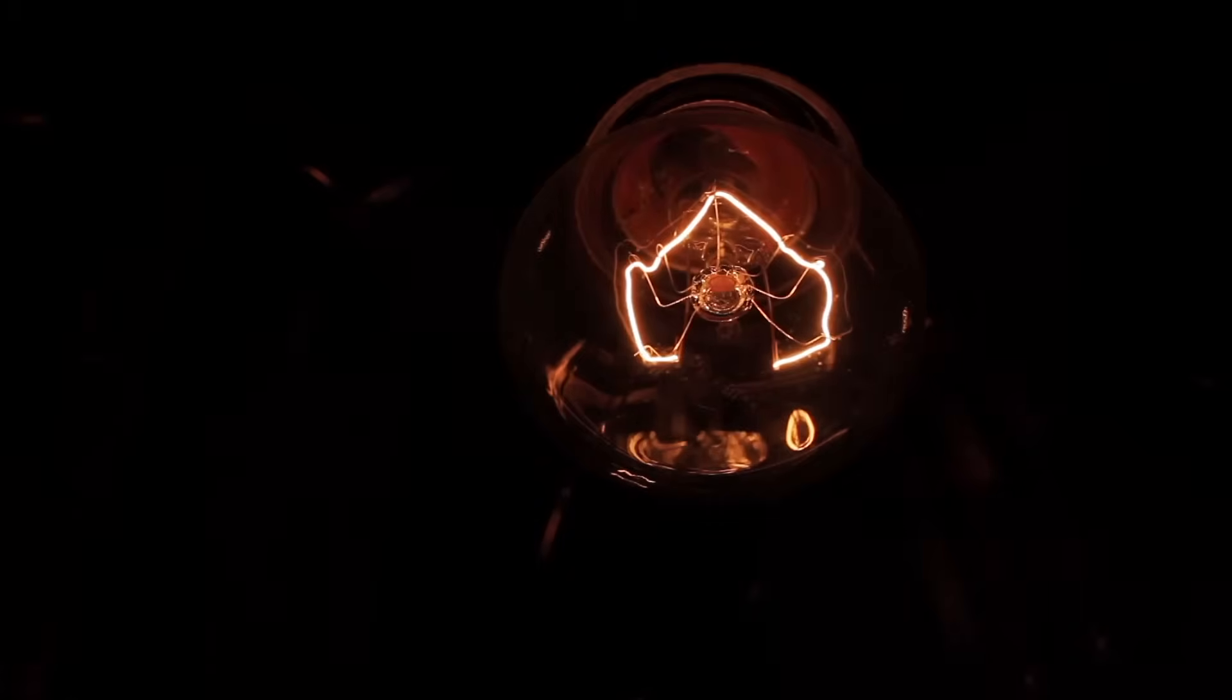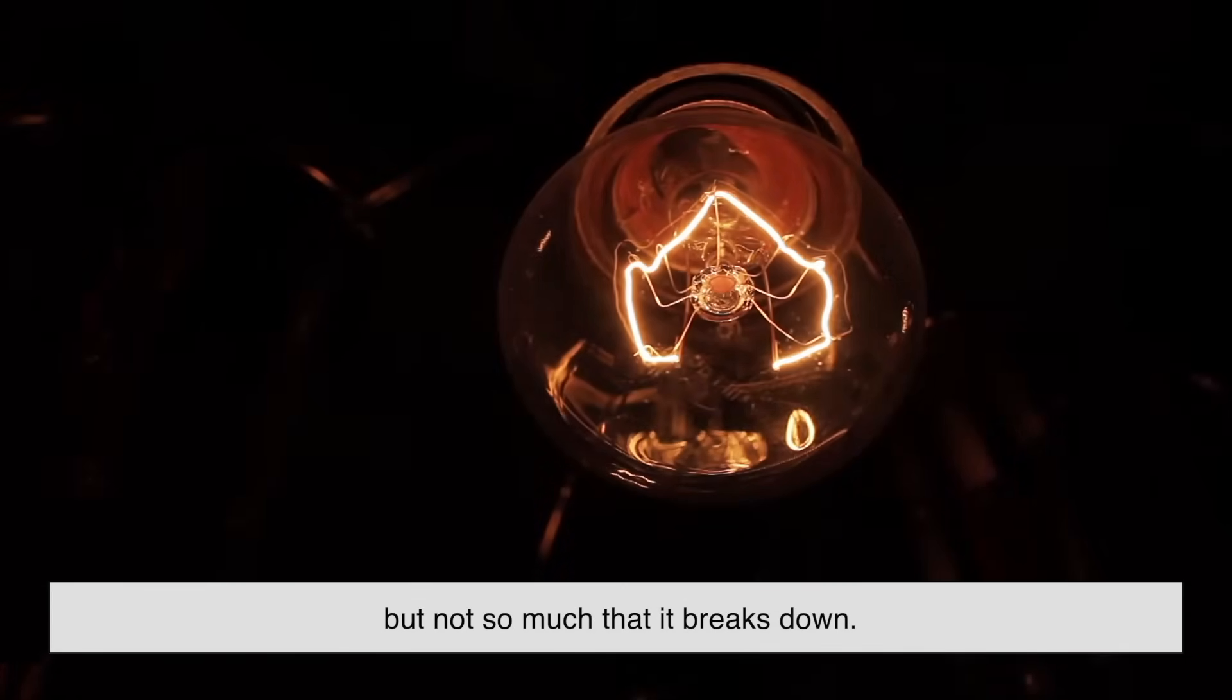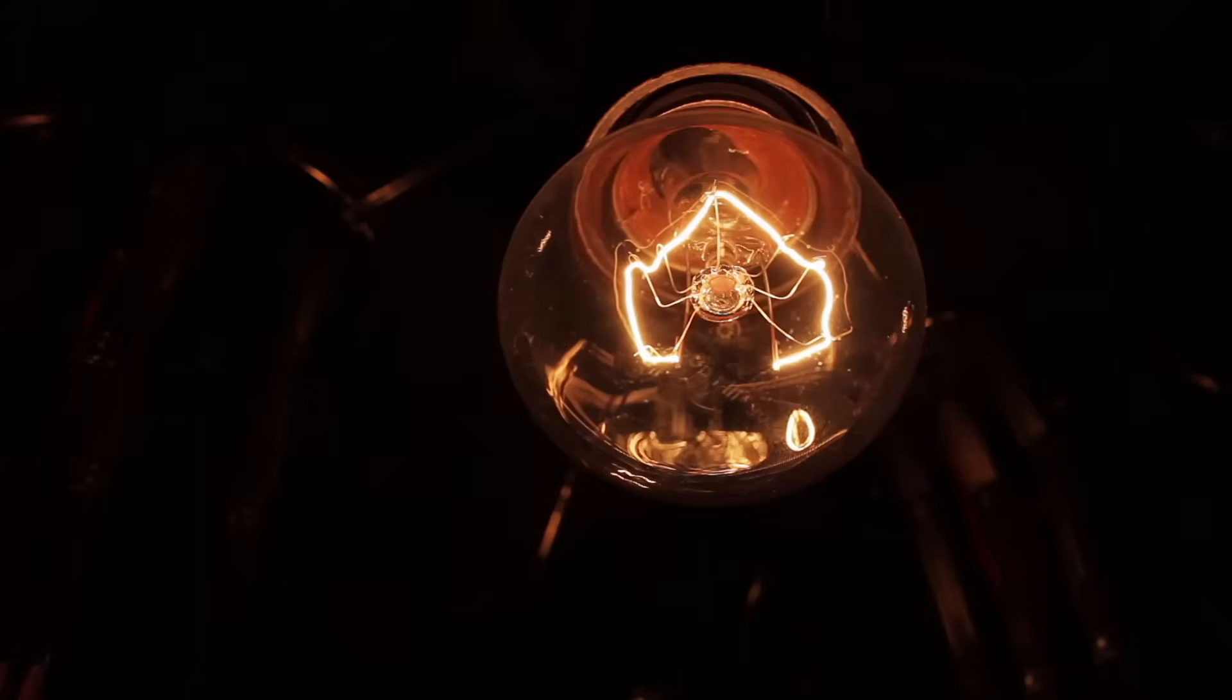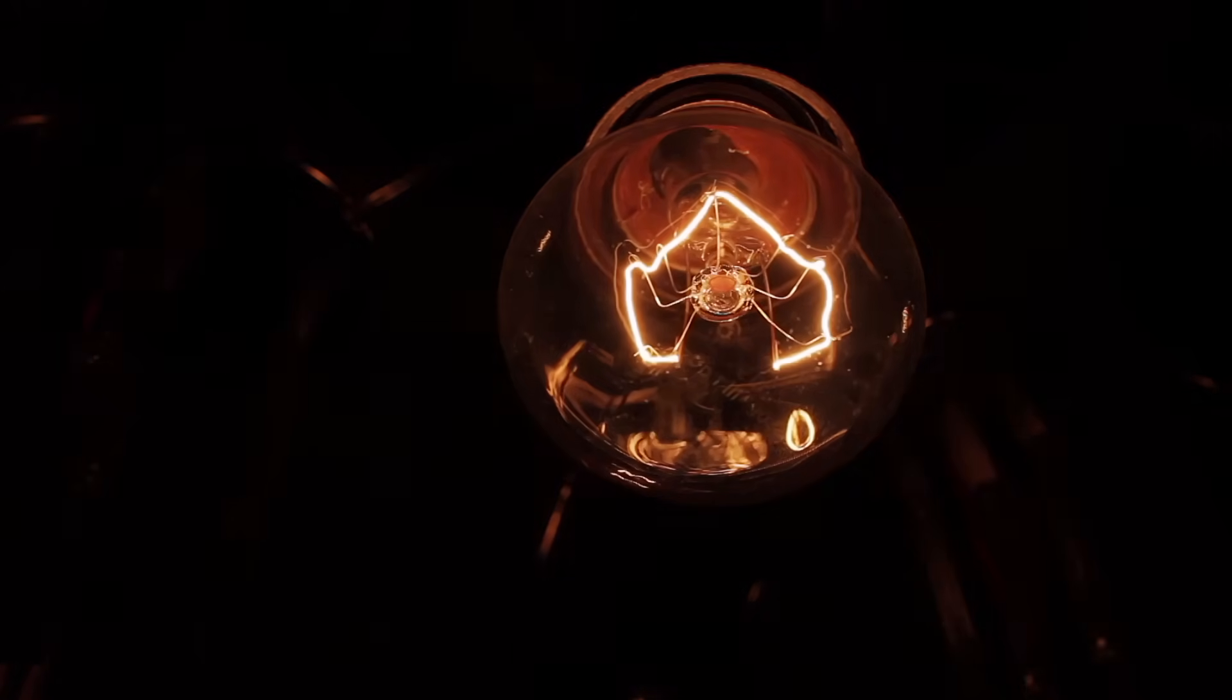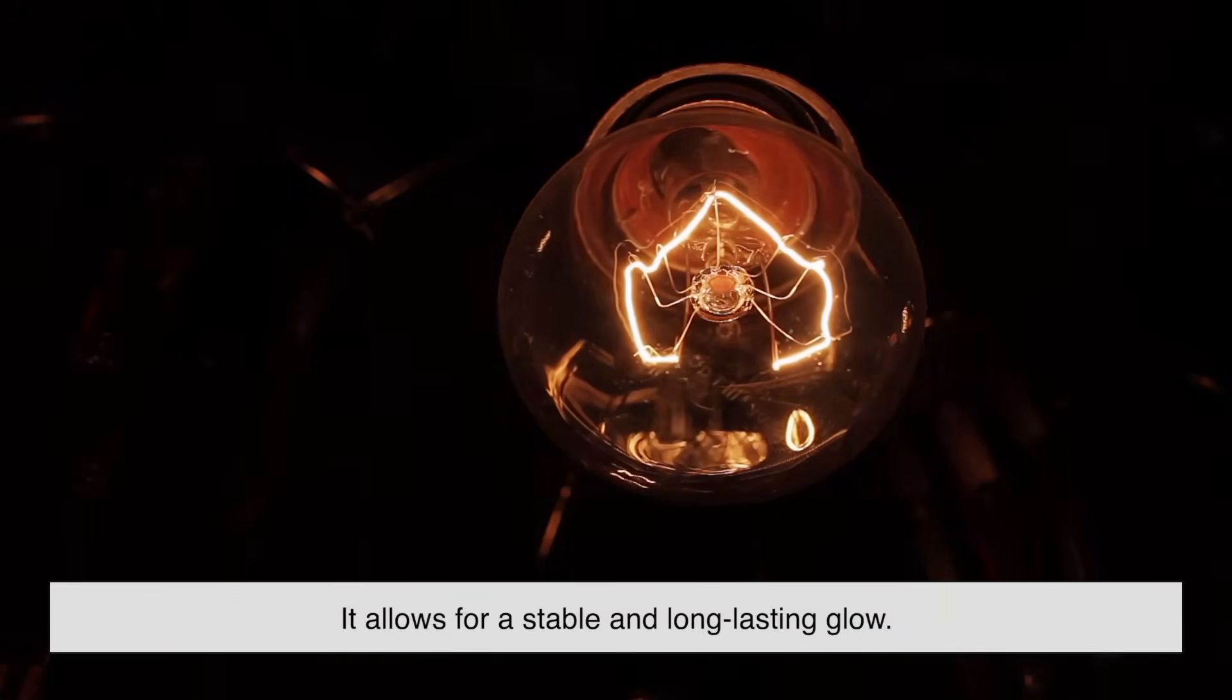The trick is finding a material that resists just enough to glow, but not so much that it breaks down. Tungsten hits that sweet spot beautifully. And because it doesn't melt until long after it's begun emitting visible light, it allows for a stable and long-lasting glow.